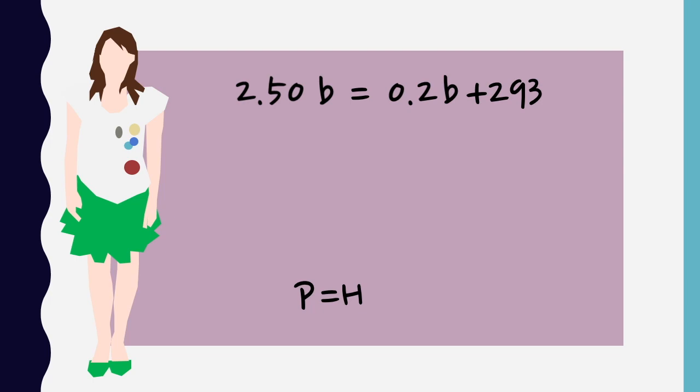Now we have b on both sides still, but we can get it on one side by subtracting all the b from the right hand side. Subtracting 0.2b from the right and from the left will keep the equality and lead to a cancelling out on the right hand side.